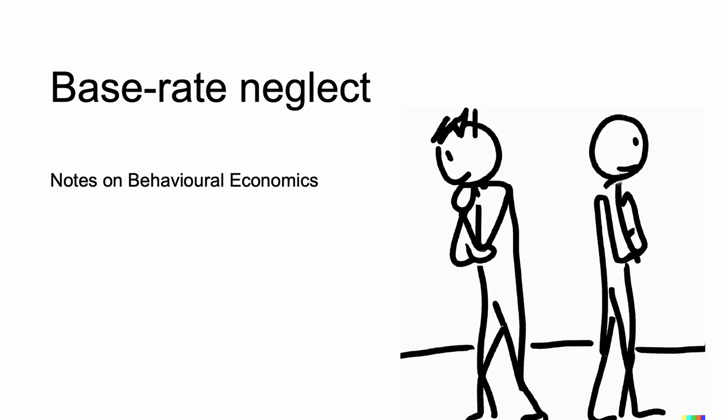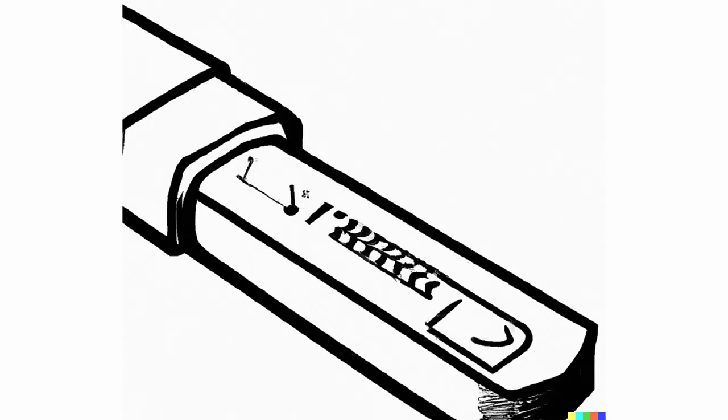This video is about base rate neglect. The base rate is the probability of an outcome unconditional on any evidence. For example, if 1% of the population has COVID-19 and the remainder doesn't, the base rate of COVID-19 is 1%. If you were to obtain evidence that someone has COVID-19, such as a positive COVID-19 test, you would use that base rate in determining the conditional probability that they have the disease.